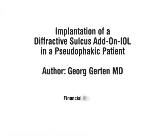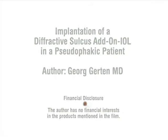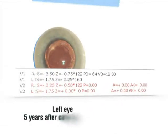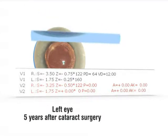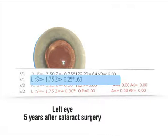In this video I would like to show you the diffractive multifocal add-on IOL implantation. In this particular case the highly myopic patient had a cataract operation five years ago. A monofocal IOL was implanted in his left eye giving him a full visual acuity with a postoperative refraction of minus 1.75.